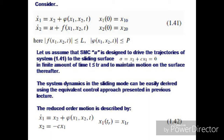Let us assume that there is a sliding mode control u which is designed to drive the trajectories of the system in equation 1.41 to the sliding surface phi = x2 + c*x1 = 0 in a finite amount of time t ≤ reaching time, and to maintain the motion on the surface thereafter. The system dynamics in sliding mode can be easily derived using the equivalent control approach presented and discussed in previous lectures.